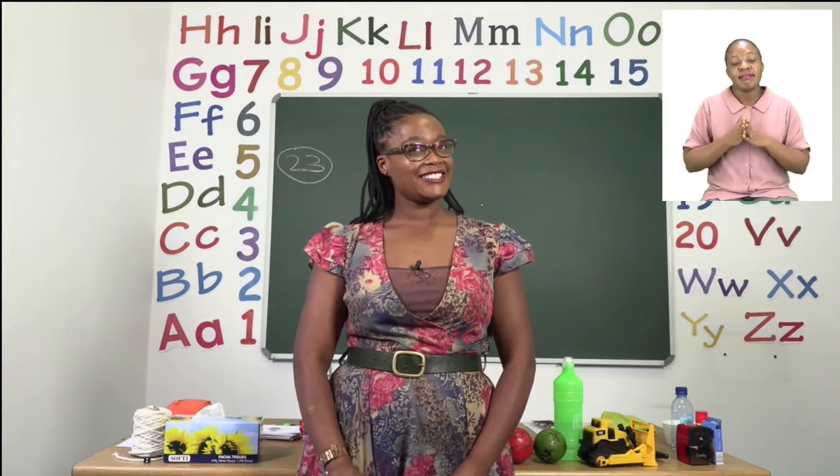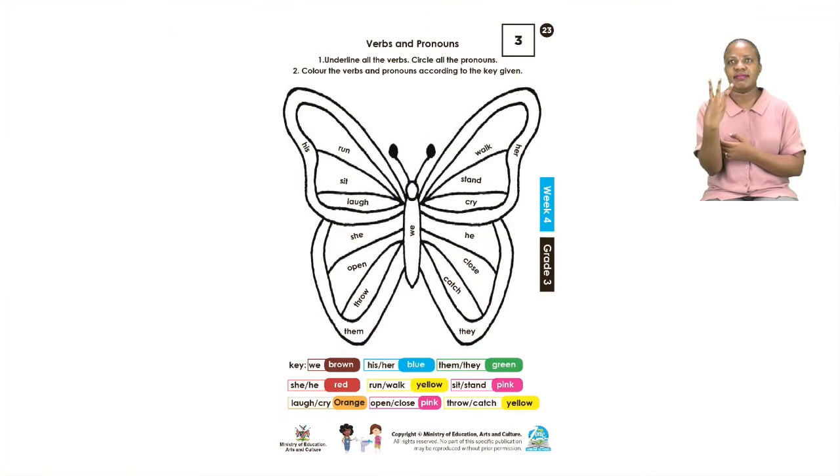For our next activity, please turn to page 23. On page 23, we have a beautiful butterfly and it is going to be your job to underline the verbs. Now, remember, verbs are doing words. So, you need to ask yourself before you underline any, am I able to? And then you underline it. If you are able to, then that means it is a verb. After underlining all the verbs, you are now going to circle the pronouns. Remember, a pronoun is a word that can be used to replace a noun. So, the first thing we need to do is underline the verbs. When you are done with underlining the verbs and circling the pronouns, the next thing that you need to do is to color the verbs and pronouns according to the colors.